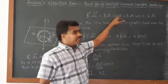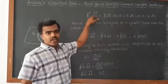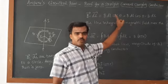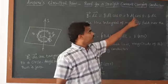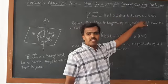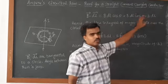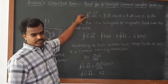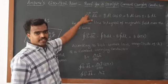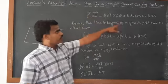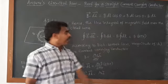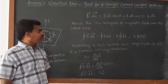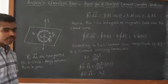Since theta is zero because B and dL are parallel, cos(0) becomes 1. So B dL cos(0) gives B dL. Therefore, the line integral of B-vector dot dL-vector is equal to the line integral of B dL. This is the line integral of the magnetic field over the closed path.